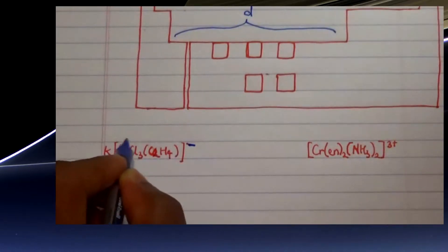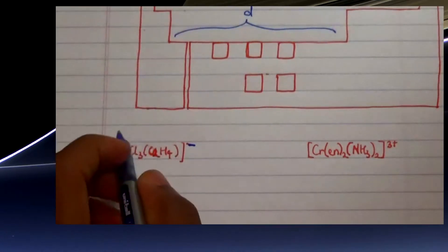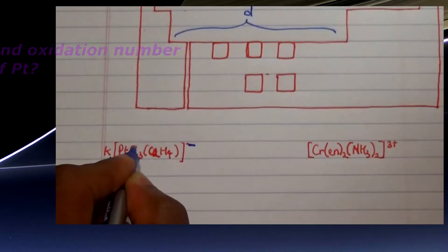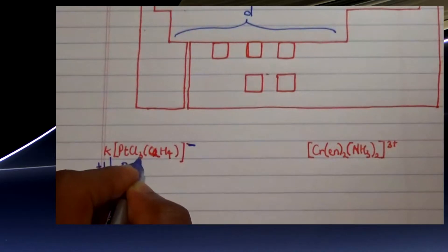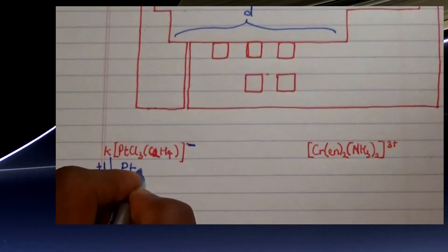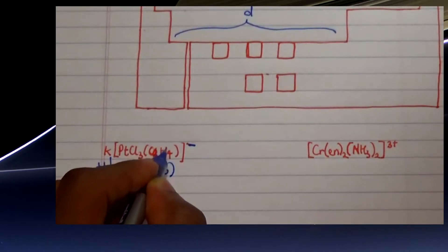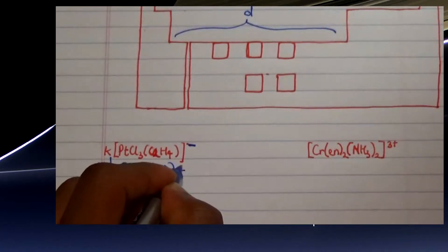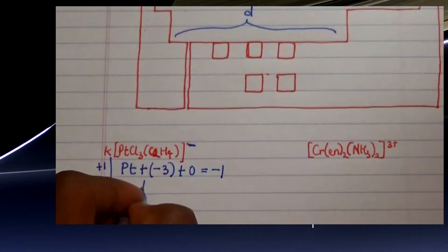So negative one is the total charge of this complex. Platinum's oxidation state is unknown, but we know we have chlorine as an anion — three of them giving a total of negative three. We also have a thiane ligand, which has a charge of zero since it's neutral. All of this must equal negative one.